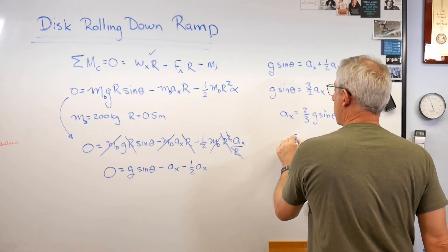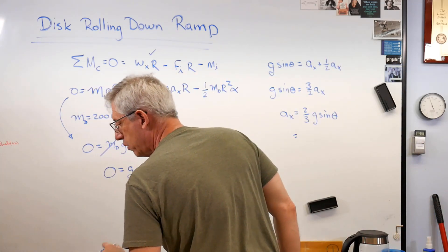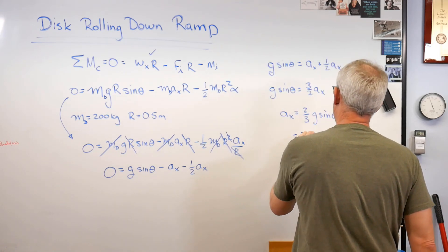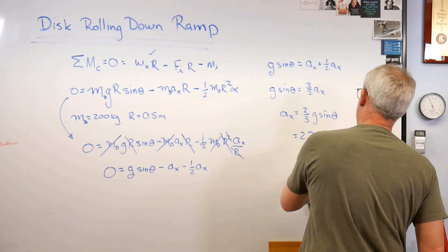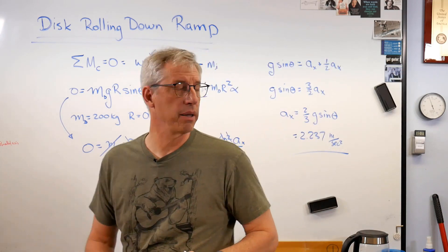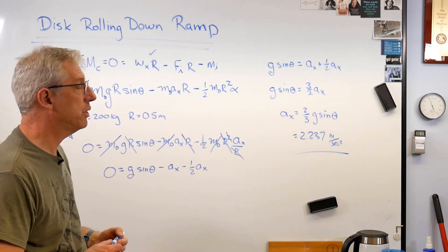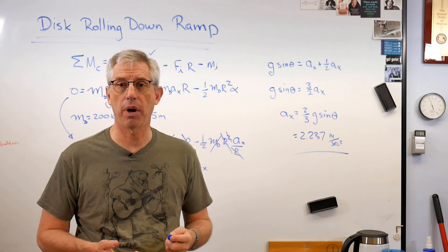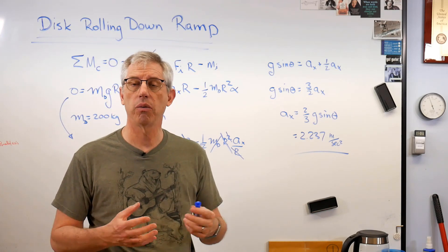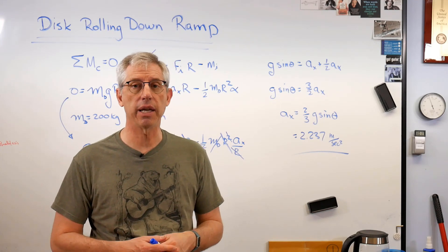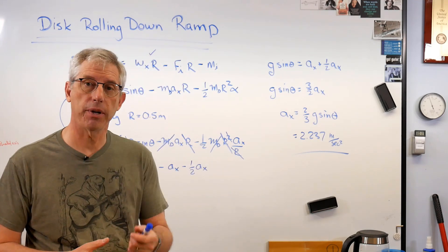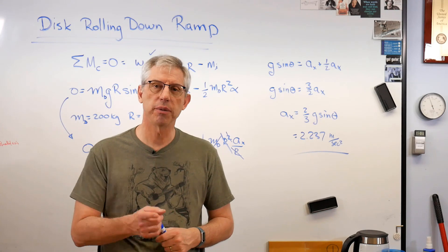So if you work this all out, you get 2.237 meters per second squared. So there you are, gang. All right. So we started out with a simple problem, expanded it out, wrote out the free body diagram, the equations of static equilibrium, and solved. There you go. Hope this helps, and we'll talk to you next time.